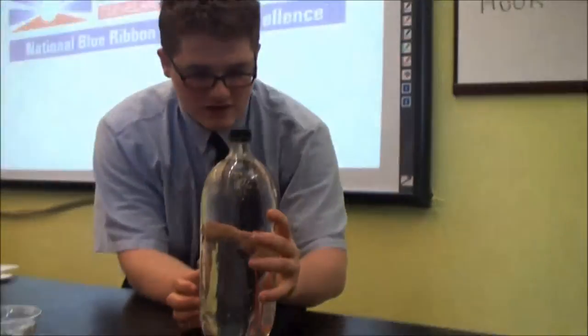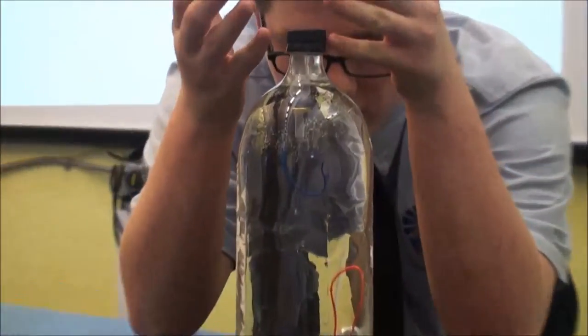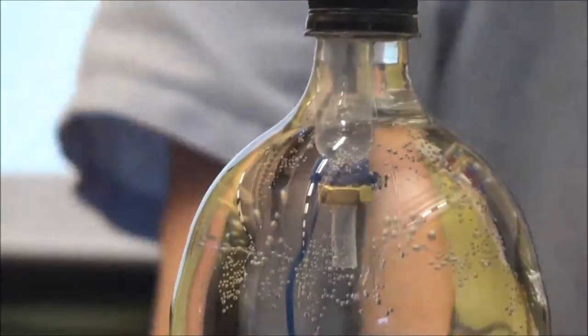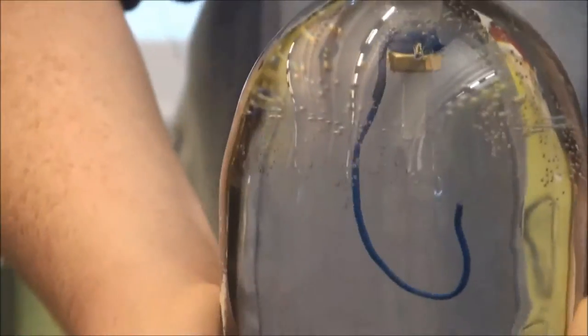So, basically, you take the two, you put them in the two liter bottle. You're going to squeeze the side and it should sink.